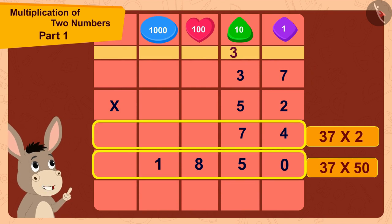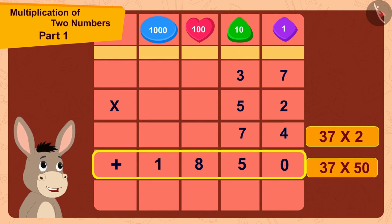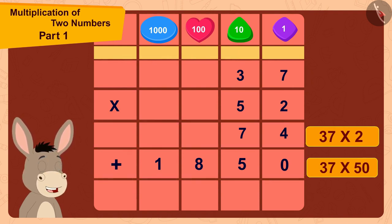37 times 5 is 185. Now, finally I will add 74 and 1850.